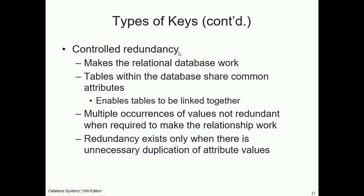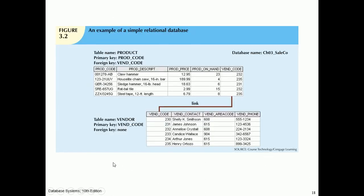Controlling redundancy is what makes the relational database work. Tables within the database share common attributes, which enables tables to be linked together. Multiple occurrences of values are not redundant when required to make a relationship work. Redundancy exists only when there is unnecessary duplication of attribute values.